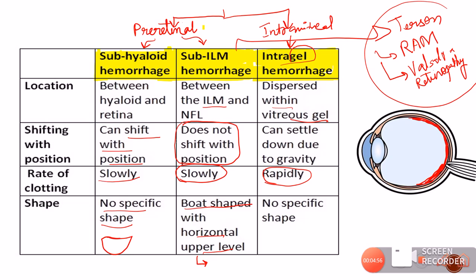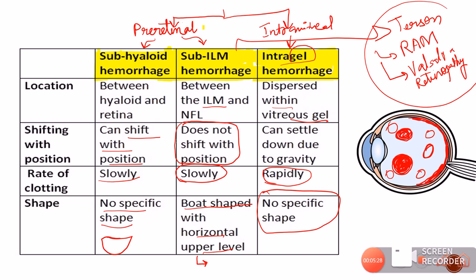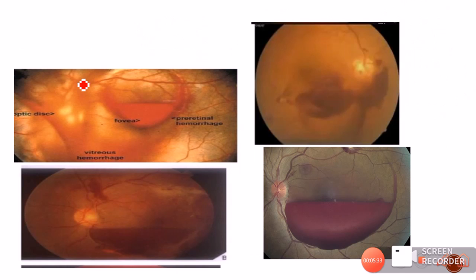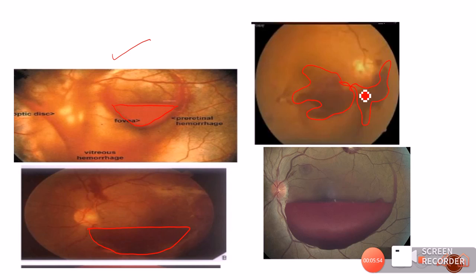The intragel hemorrhage does not have any specific shape like that of sub-ILM or subhyloid hemorrhage, because within the vitreous chamber there can be pockets of liquefaction and clumping of gel structures. The images shown here demonstrate a typical boat-shaped hemorrhage with a horizontal upper level for the ILM bleed, another boat-shaped hemorrhage for subhyloid, and a varied-shape intragel hemorrhage. Also visible is a case of Terson syndrome with a large pre-retinal or sub-ILM hemorrhage.